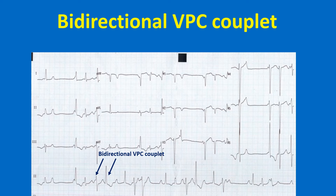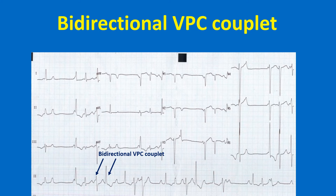Multiple wide, bizarre QRS complexes without preceding P waves are ventricular ectopic beats in this ECG. Since they have different morphologies, they are called polymorphic VPC. Some of the couplets are seen to be bidirectional while others are unidirectional. In addition, there are QS complexes in V1 and V2 with a slightly curved ST segment and T wave inversion, reminiscent of an old myocardial infarction. Bidirectional VPC and bidirectional ventricular tachycardia can be seen in digoxin toxicity, Andersen-Tawil syndrome, catecholaminergic polymorphic ventricular tachycardia, myocarditis, myocardial infarction, and metastatic cardiac tumours.